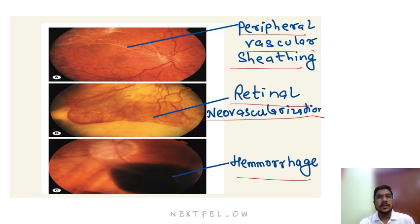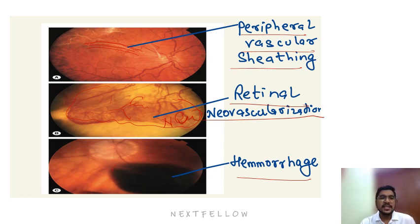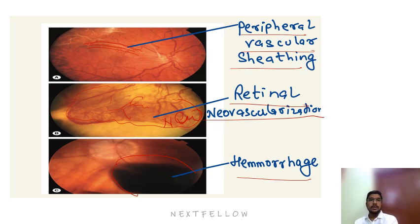Peripheral vascular sheathing is visible here — its timing is controversial, but most retinal surgeons consider it part of the chronic condition. After chronic inflammation, there is sheathing of vessels. You can also see the abnormal new vascular network. These new vessels can bleed, covering the macular area and distorting visual acuity.